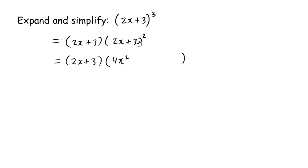This is 2x times positive 3, which is 6x, and double it. So we get positive 12x. 3 times 3 is 9.